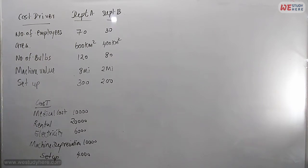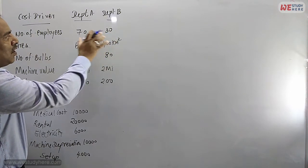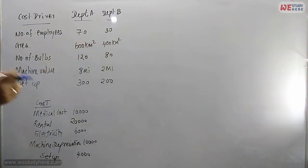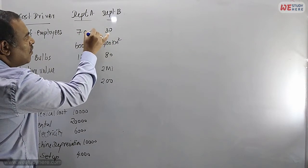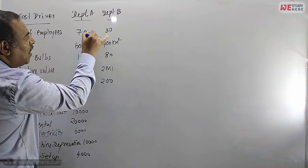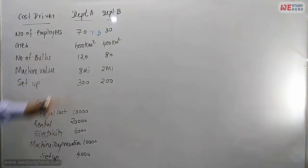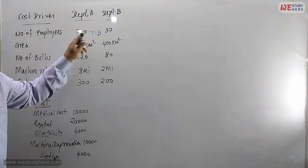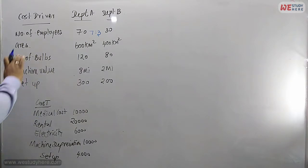Number of employees: Department A has 70, Department B has 30. We need to simplify this ratio because it is very easy to calculate. 70 is to 30, we can simplify to 7 is to 3 — just remove the zero.